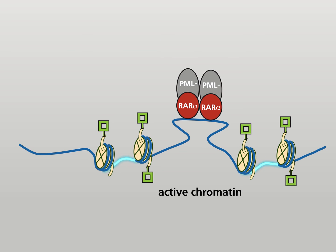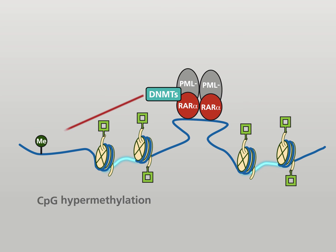The oligomers of the fusion protein associate with DNA methyltransferases. DNA methyltransferases silence genes by methylating CpG islands in promoter regions.